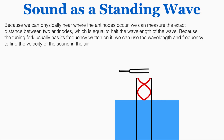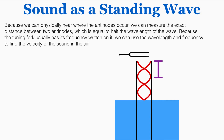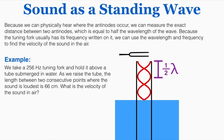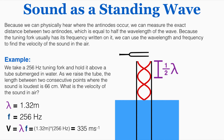Because we can physically hear where the antinodes occur, we can measure the exact distance between two antinodes. That distance is equal to half the wavelength of the wave. Because the tuning fork usually has the frequency written on it, we can use the wavelength and frequency to find the velocity of the sound in the air. As an example: if the tuning fork is 256 Hz and the distance between two consecutive points where the sound is loudest is 66 centimeters, the wavelength is 66 cm × 2 ÷ 100 = 1.32 meters. The velocity is therefore 256 Hz × 1.32 m = 335 meters per second.